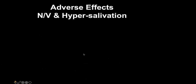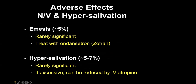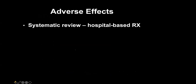Nausea and vomiting can occur in about 5% of patients and rarely is significant; it happily responds to ondansetron (Zofran) intravenously. Hypersalivation occurs at about the same or slightly higher frequency — up to about 7% — but is rarely significant. If excessive oral secretions could impair the airway, it can be stopped with 0.25 to 0.5 mg of intravenous atropine.